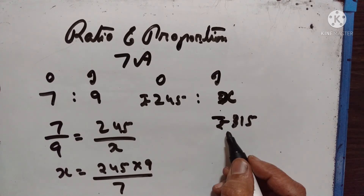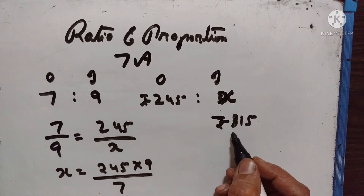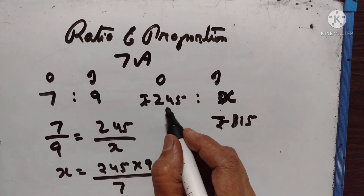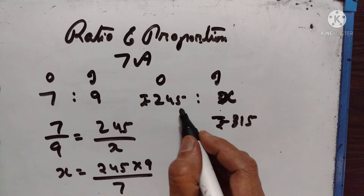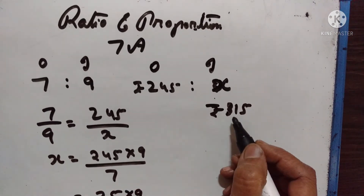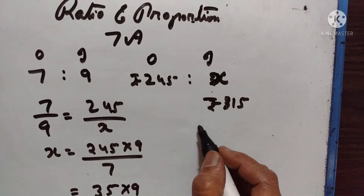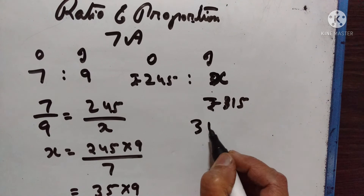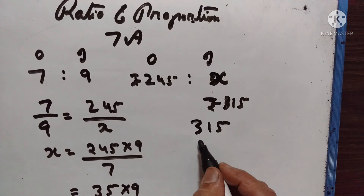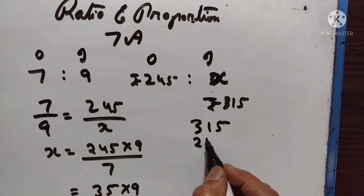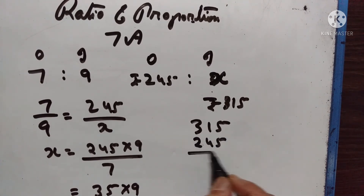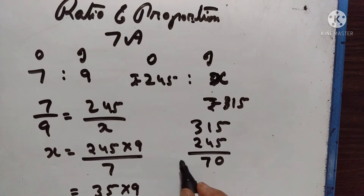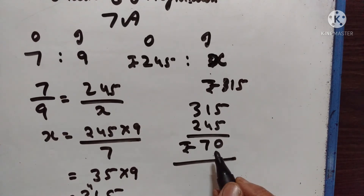So what is the increase? The original fare was 245 and it has increased to 315. So the increase in fare is equal to 315 minus 245, which is Rs. 70. Rs. 70 is the increase in fare.